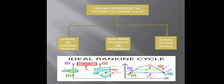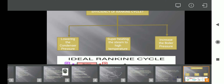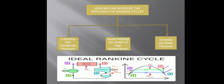To address this problem, we can superheat the steam to a high temperature. By superheating, we move the expansion line into the superheated zone. This is advantageous because the turbine output will be nearly 100% vapor, protecting the turbine blades and also increasing turbine work.